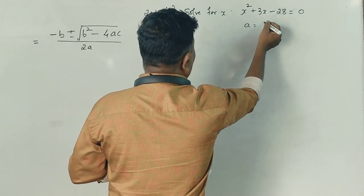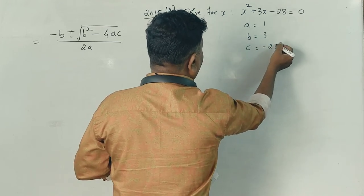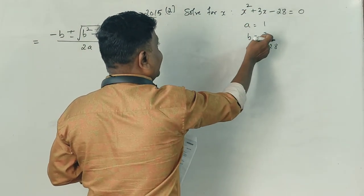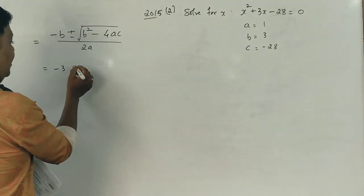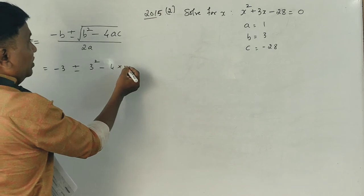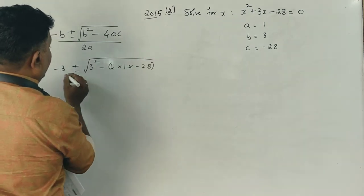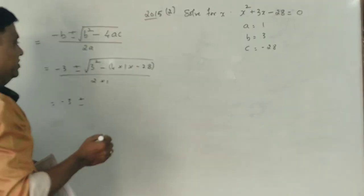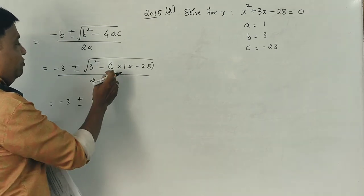Here, a is equal to 1, b is equal to 3, c is equal to minus 28. Correct. The formula is: x equals minus b plus or minus square root of b squared minus 4ac, all divided by 2a. So substituting: minus 3 plus or minus square root of 3 squared minus 4 into 1 into minus 28, divided by 2 into 1.